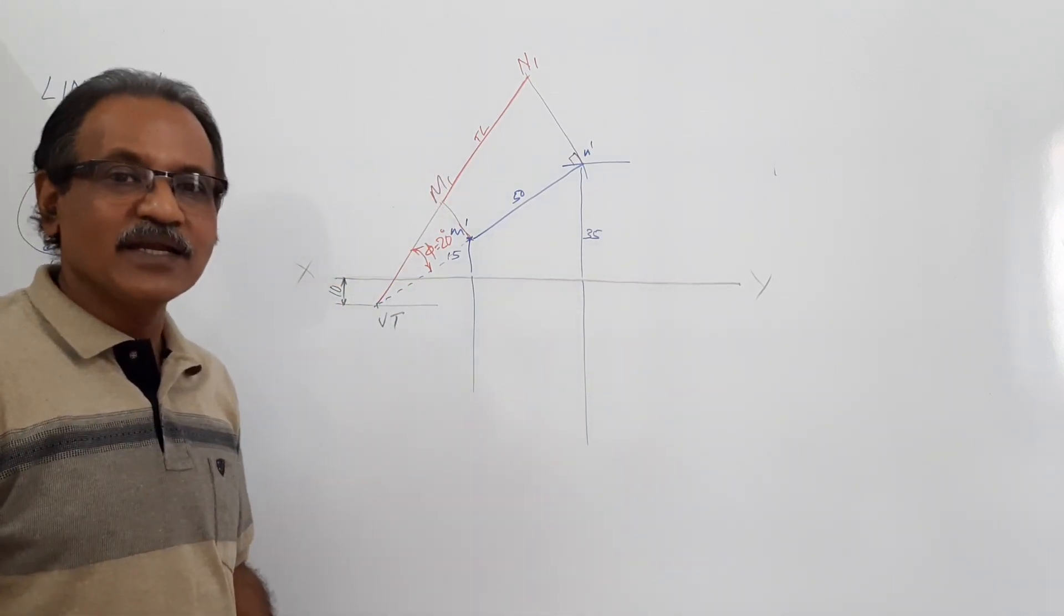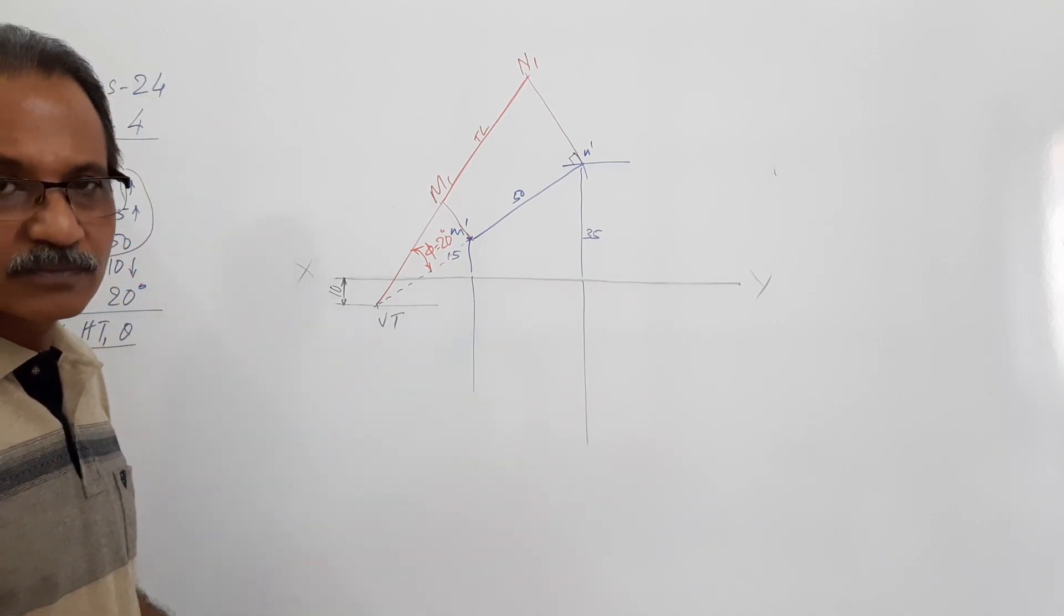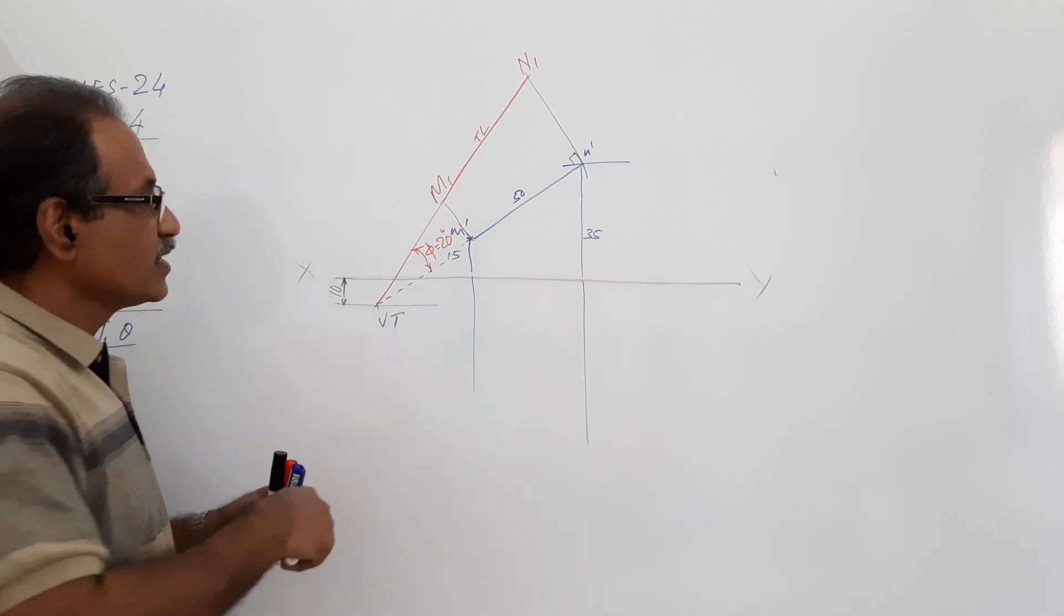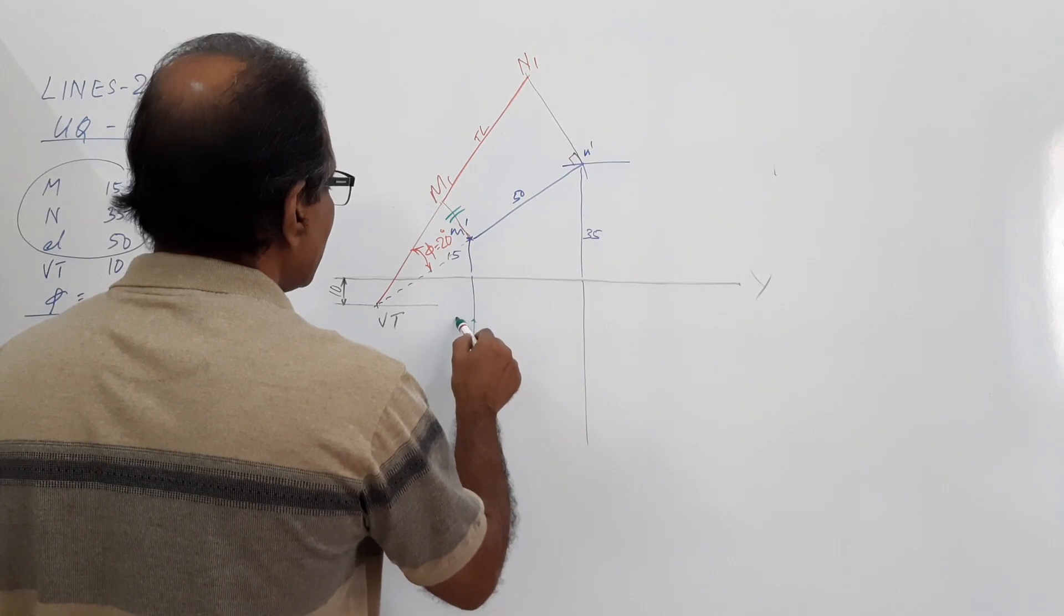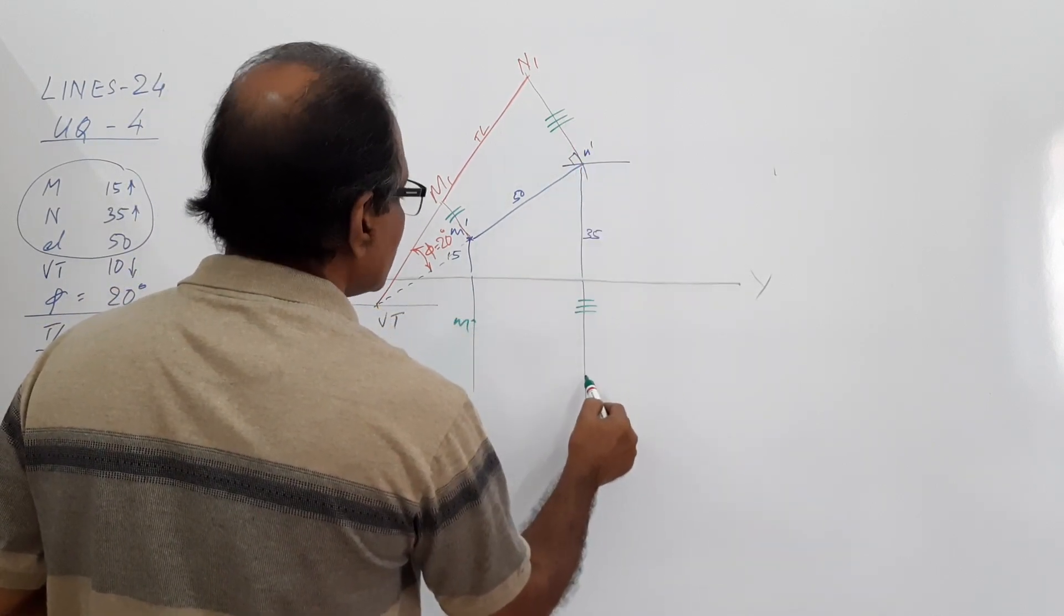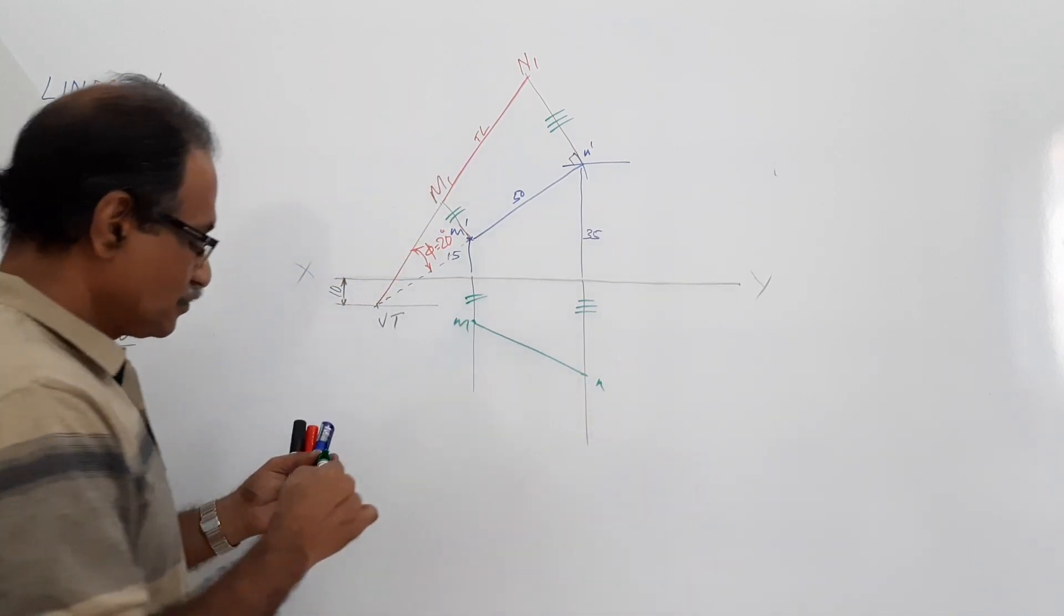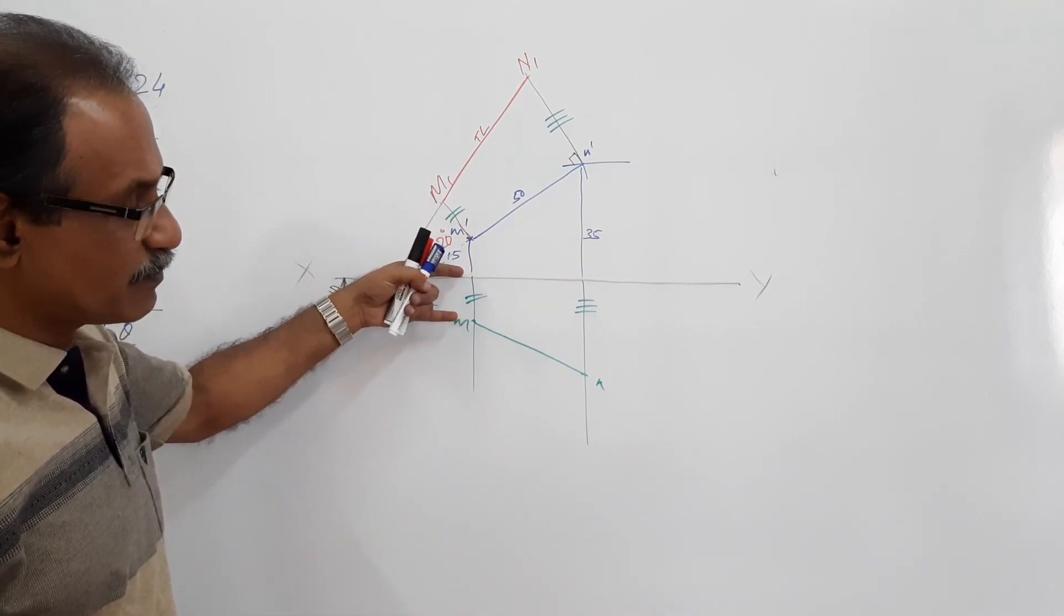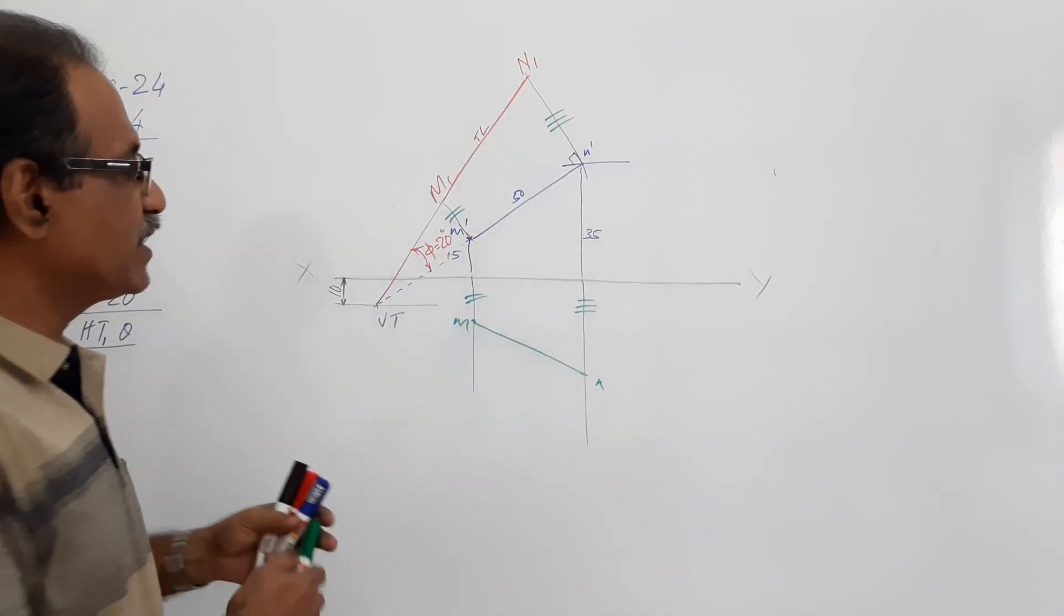This will contain the plan if you assume the line is in first quadrant. This will contain the plan if the line is in first quadrant. Take this distance and mark M. Take this distance and mark N. MN is the plan. Take this distance and mark from XY downwards. You get MN - MN is the plan.